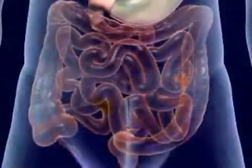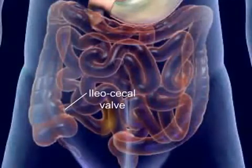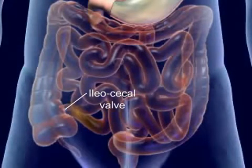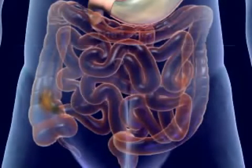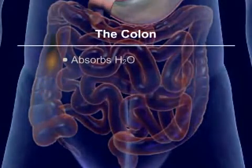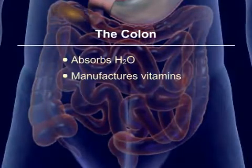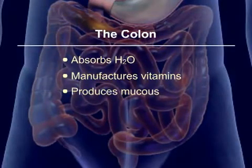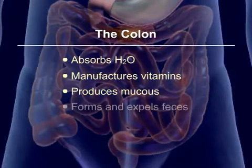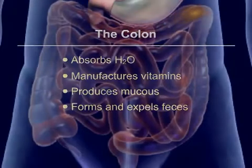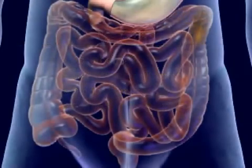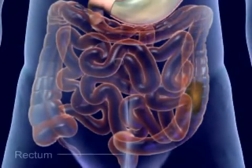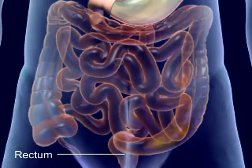The undigested food reaches the ileocecal valve and enters the large intestine, or colon. The colon absorbs water, manufactures vitamins, produces mucus, and forms and expels feces. Mass peristalsis pushes the feces into the rectum, which stimulates the defecation reflex.